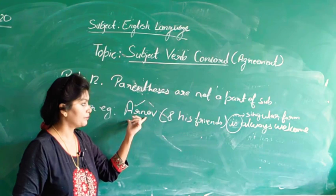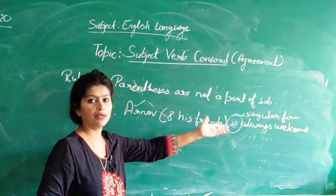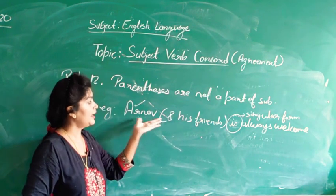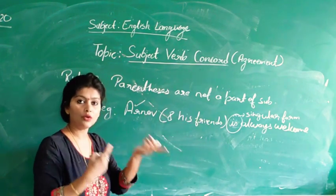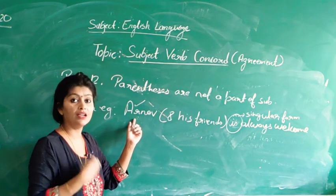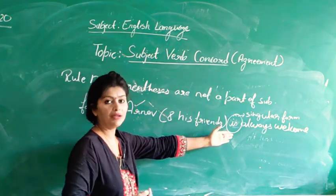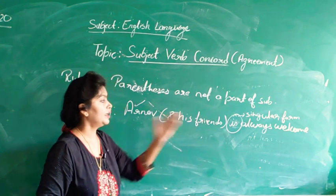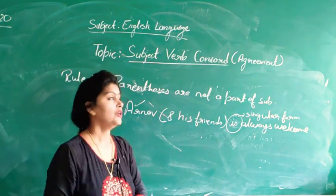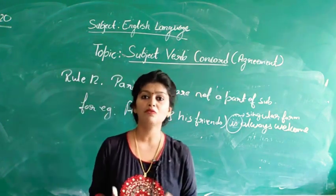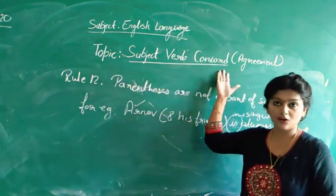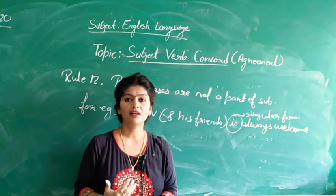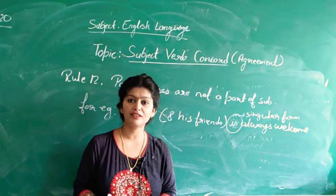If the subject were plural — for example, 'They (and their friend) are always welcome' — we use the plural form. Rule number 1 reminds us: singular subject takes singular verb, plural subject takes plural verb. With this, I have discussed 12 vital rules of subject-verb concord. Go through this video and read the rules thoroughly. Take very good care of yourselves. God bless you all.